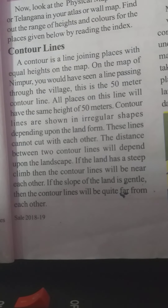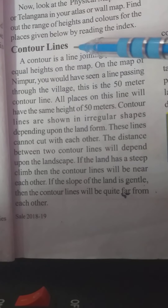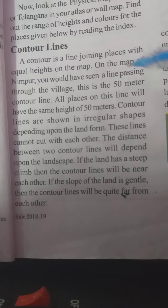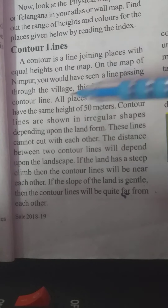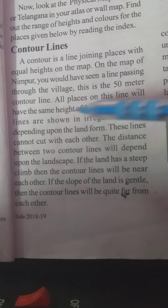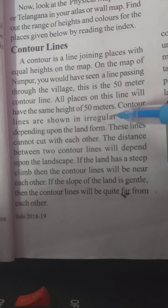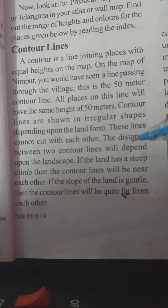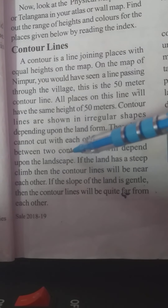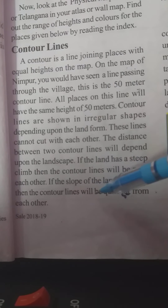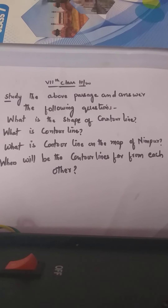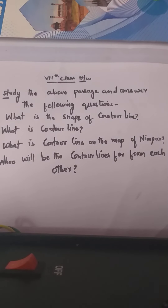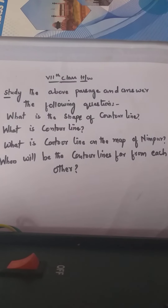See on page number five in your textbook, you have a passage about the contour line. A contour line is a line joining places with equal heights on the map. On the map of Nimpur, you would have seen a line passing through the village — this is the 50-meter contour line. All places on this line will have the same height of 50 meters. Contour lines are shown in irregular shapes depending upon the land forms, and these lines cannot cut each other.